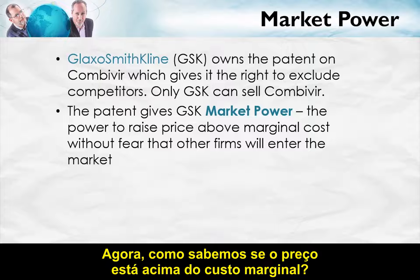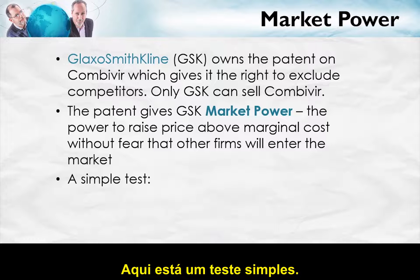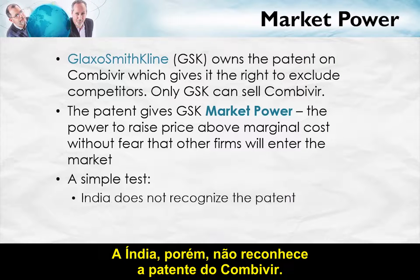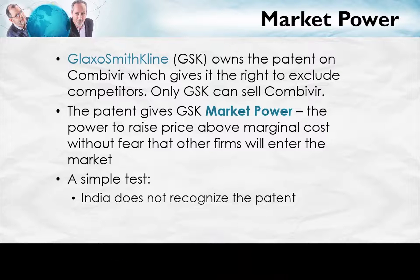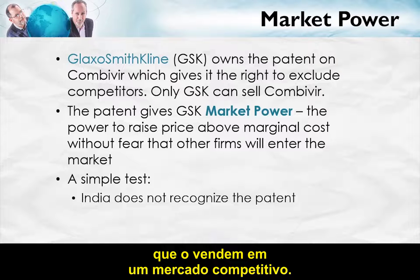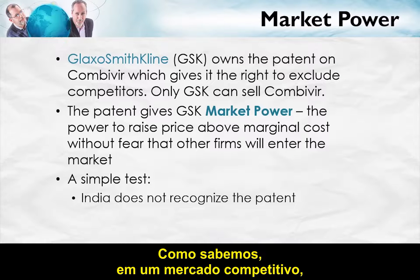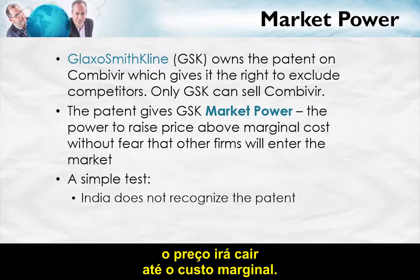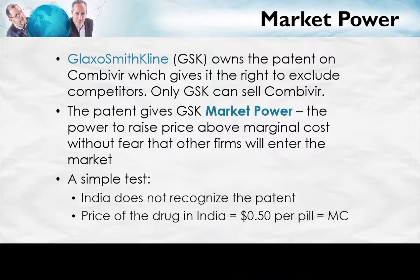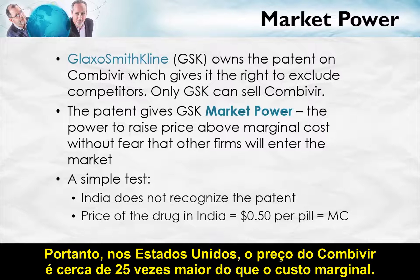How do we know that price is above marginal cost? Here's a simple test. In the United States, Combivir costs around $12 to $13 per pill. India, however, does not recognize the patent on Combivir, so there are many producers selling in a competitive market. As we know, in a competitive market price will fall to marginal cost. And in India, the price of Combivir is about $0.50 per pill. Thus, in the United States, the price of Combivir is about 25 times higher than the marginal cost.